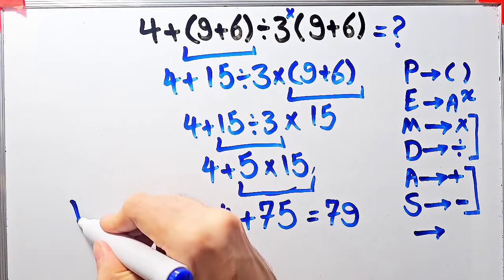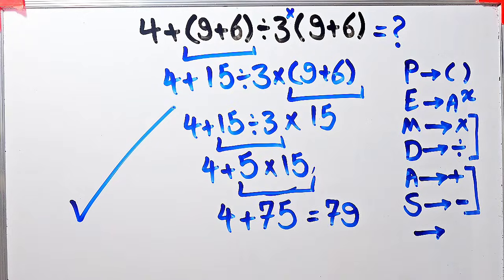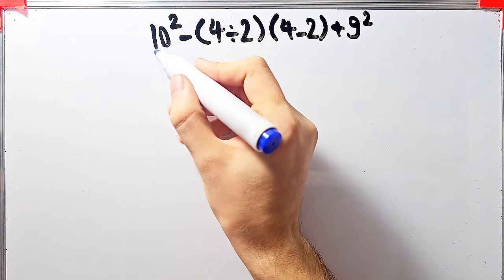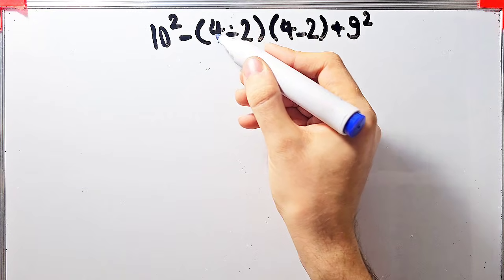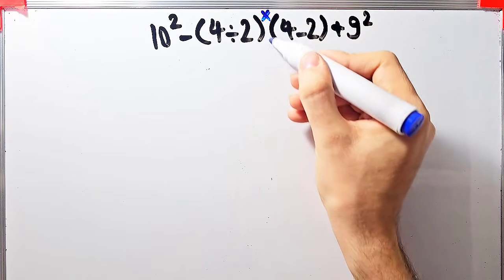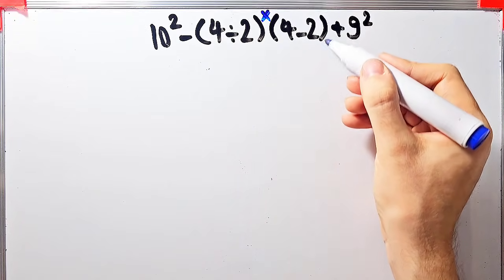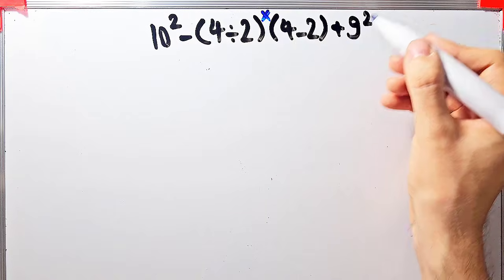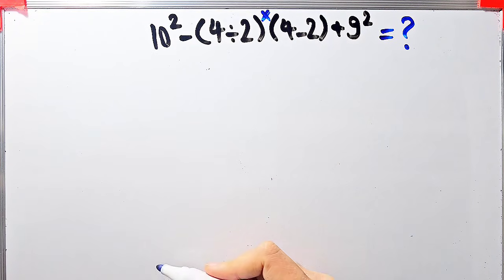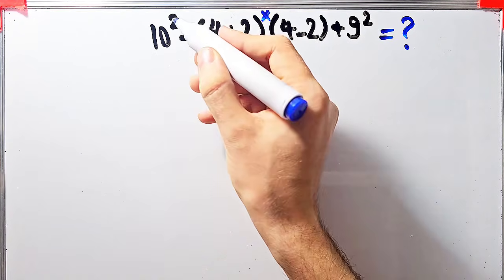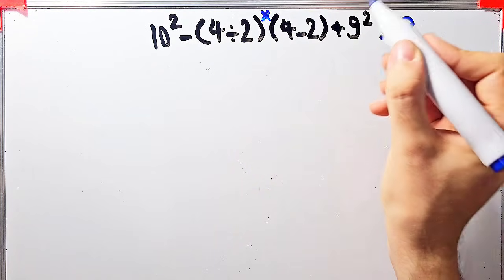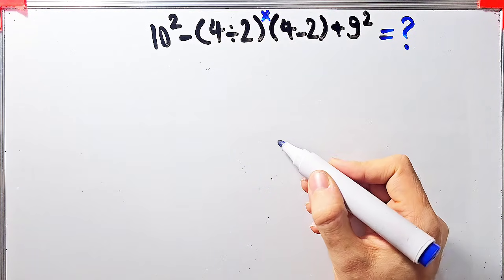Let's solve another question about the PEMDAS rule. In this question we have: ten to the power of two, minus open parentheses four divided by two close parentheses, times open parentheses four minus two close parentheses, plus nine to the power of two. In this question we have exponents, subtraction, parentheses, division, multiplication, and addition.